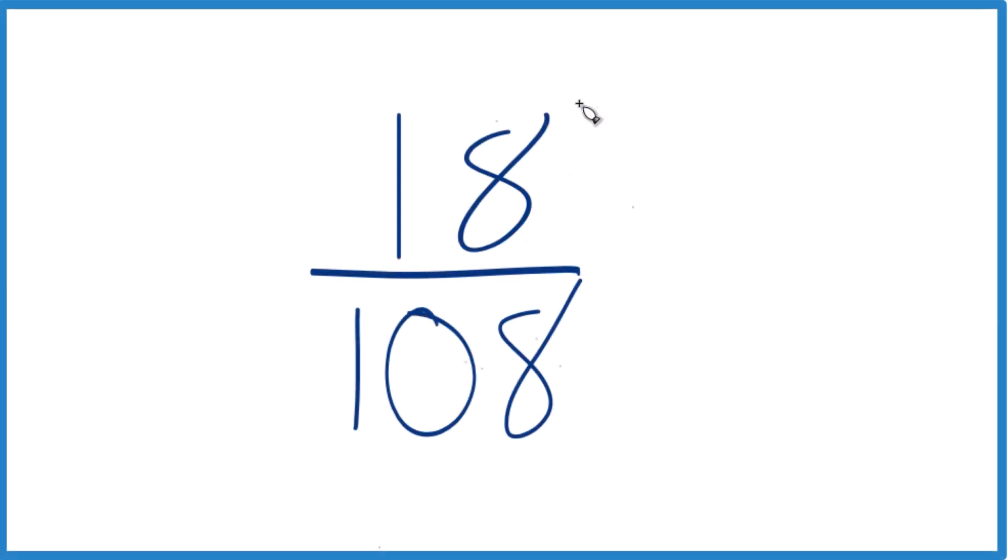In this video, we're going to simplify the fraction 18 over 108. And the way we do this is we need to find a common factor for both 18 and 108, some number that goes into both of these evenly.